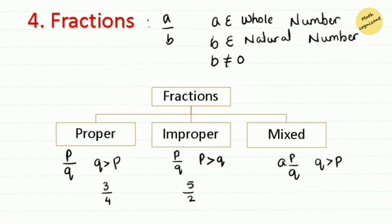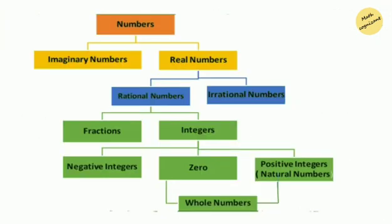You can easily change an improper fraction into a mixed fraction by the long division method, where the quotient acts as an integer, the remainder will be the numerator, and the denominator is the divisor itself. For example, 7 over 3. When we do the long division for this fraction, we get a quotient as 2 and remainder as 1, and 3 which is the divisor will remain as the denominator. Therefore, we can change an improper fraction into a mixed fraction.